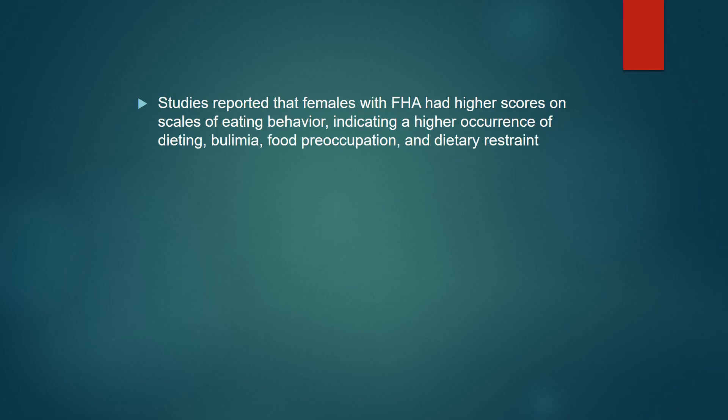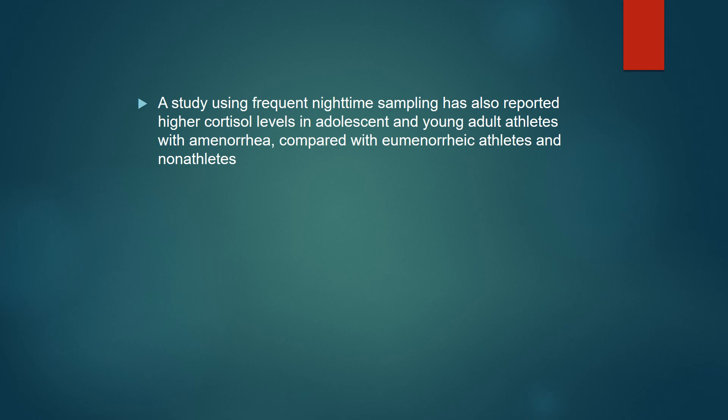Studies have reported that females with FHA have higher scores on scales of eating behavior, indicating a higher occurrence of dieting, bulimia, food preoccupation, and dietary restraints. A study using frequent nighttime sampling has also reported higher cortisol levels in adolescent and young adult athletes with amenorrhea.